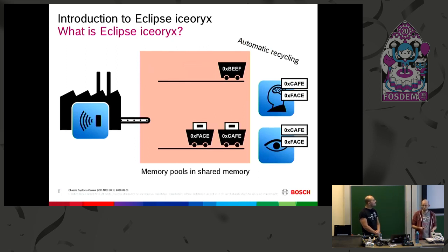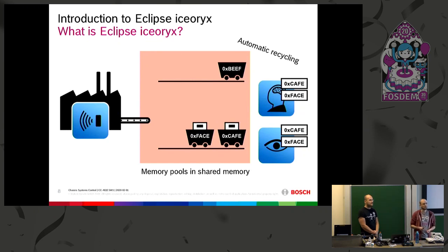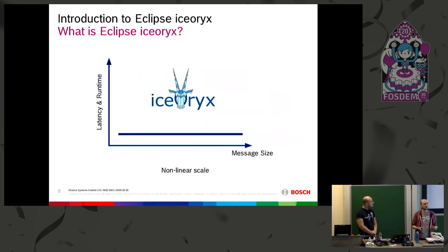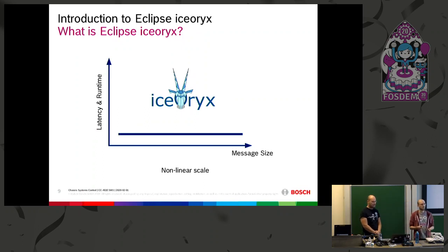Two more data packages are produced, and the data in an already-consumed wagon is recycled using reference counting to automatically recycle unused memory chunks. If you plot this again, the latency is now independent from the message size — you get virtually limitless data transmission at constant time.